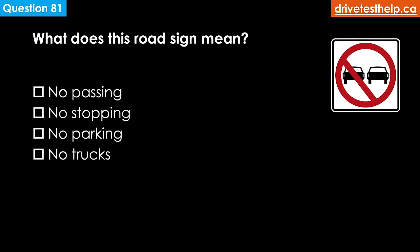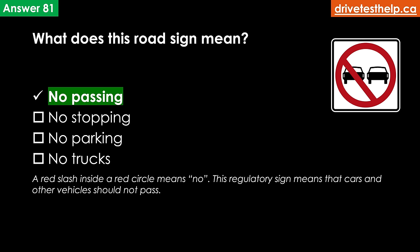What does this road sign mean? Options: no passing; no stopping; no parking; no trucks. The correct answer is no passing. A red slash inside a red circle means no — this regulatory sign means that cars and other vehicles should not pass.